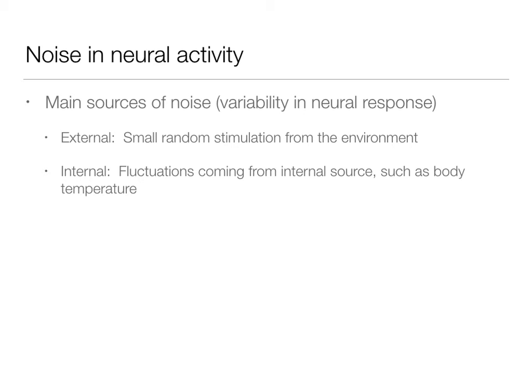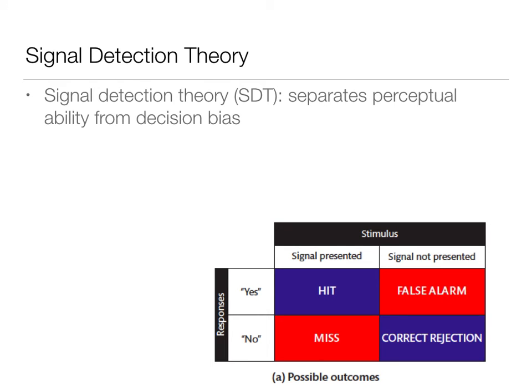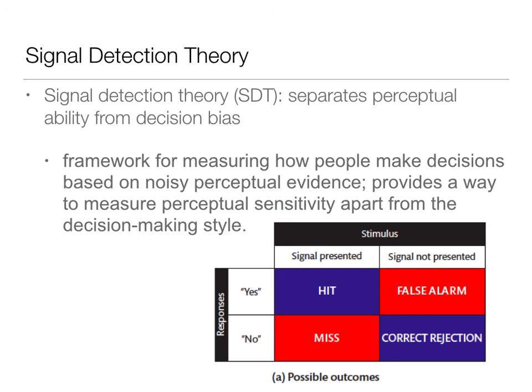Signal detection theory really separates perceptual ability from decision bias — that ability to sometimes say we heard something that we didn't, or say we didn't hear something that we really did. Signal detection theory tries to parse those apart. It's a framework for measuring how people make decisions based on the fact that they have noisy neural signals and variations in their spike rates for the same stimulus. Signal detection theory starts to try to parse these things apart and provides a way to measure perceptual sensitivity and separate it from decision-making style.